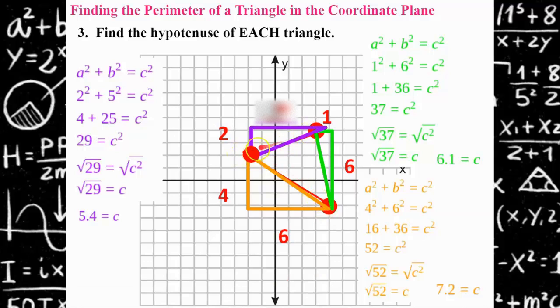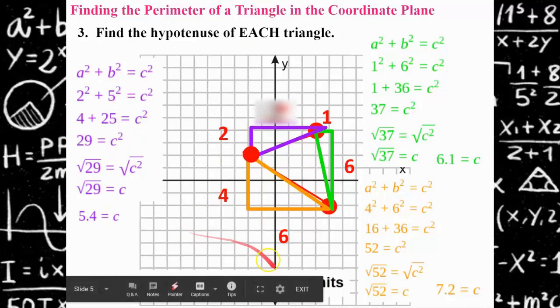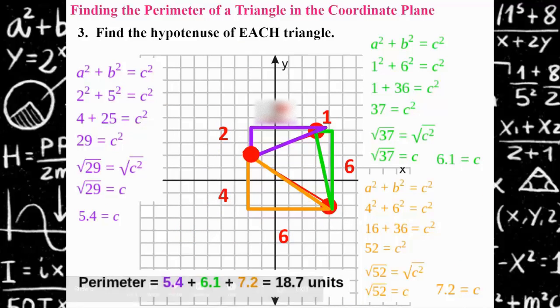So now we have the measurements. This triangle side is 5.4, this side is 6.1, and this side is 7.2. So last step, the perimeter, add all three sides up together, and you get 18.7 units.